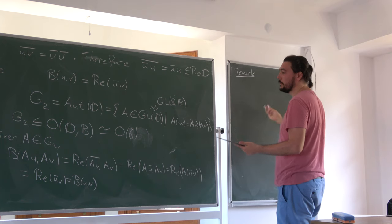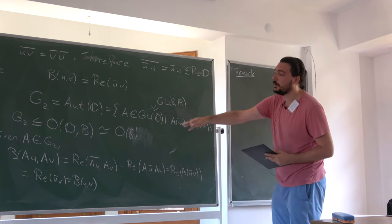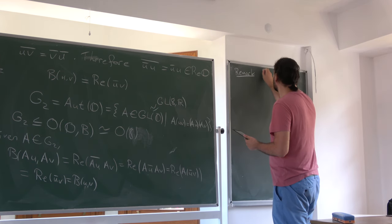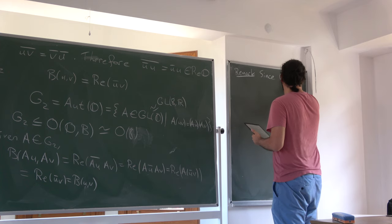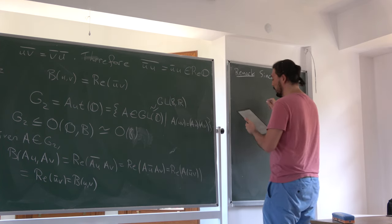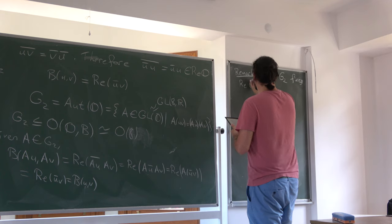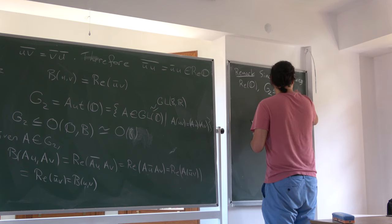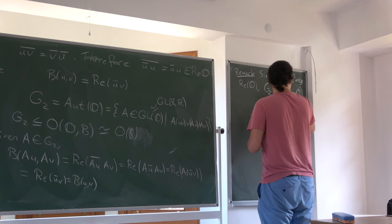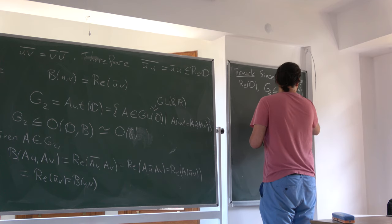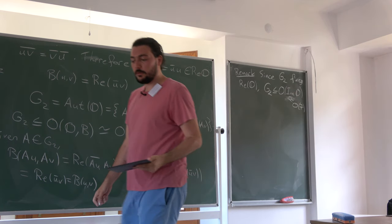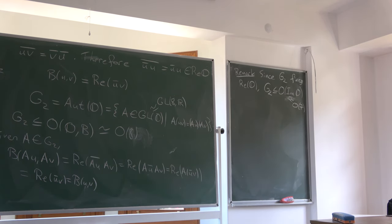If you want to avoid exterior algebra language, for alternating L the second condition is equivalent to: the norm of L(V_1,...,V_r) equals the product of the individual norms, for all orthogonal V_1,...,V_r. Brown and Gray in 1967 proved there are only finitely many possibilities for cross products. I'll state that theorem next time and continue from there.